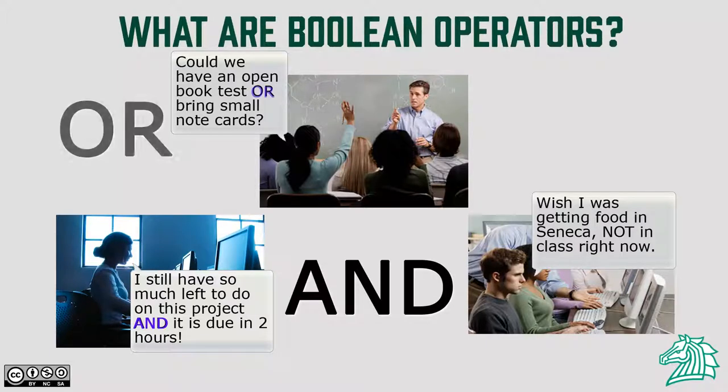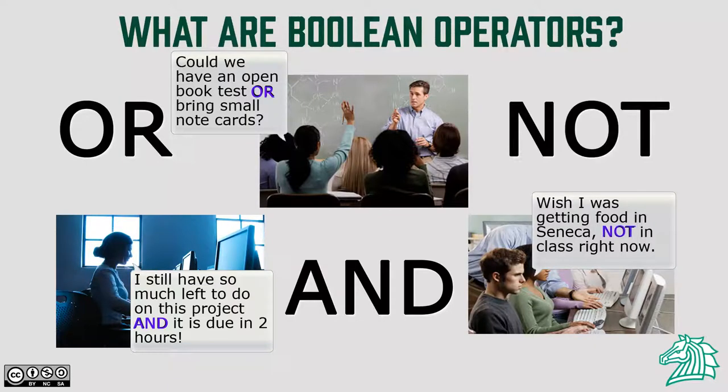These words are and, or, not. Using these three words you will be able to control what you search for with much more accuracy by narrowing your results, expanding your results, and excluding certain results.